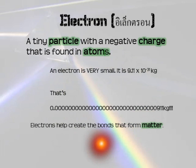Electrons. An electron is a tiny particle with a negative charge that is found in atoms, and sometimes outside of atoms. An electron is very, very small — it is 9.11 times 10 to the minus 31 kilograms. That's 30 zeros and then 911 kilograms — a very, very small number. Electrons are very important because they help create bonds, and the bonds between atoms is what forms all matter. We are all made of matter, so they are very, very important to us.